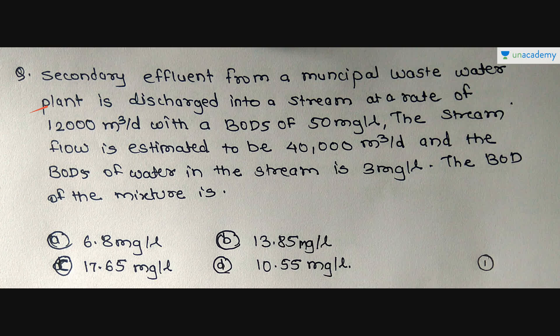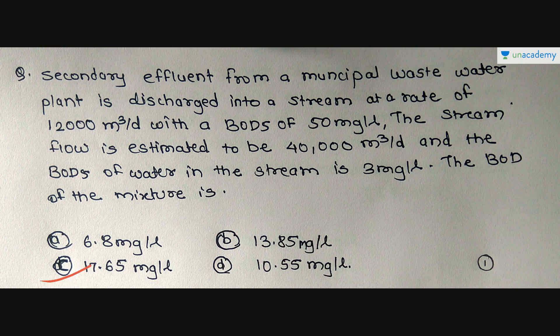Based on the C-mix equation, we are going to solve some examples. The first example: the secondary effluent from a municipal wastewater plant is discharged into a stream at a rate of 12,000 m³/day with a BOD₅ of 50 mg/L. The stream flow is 40,000 m³/day and the BOD₅ of the stream water is 3 mg/L. The BOD of the mixture is: Option A: 6.8 mg/L, Option B: 13.85 mg/L, Option C: 17.65 mg/L, Option D: 10.55 mg/L.